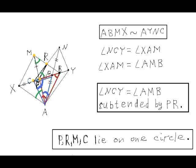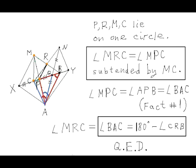And since these two angles are subtended by the same segment PR from the same side, it follows that the points P, R, M, and C lie on one circle.